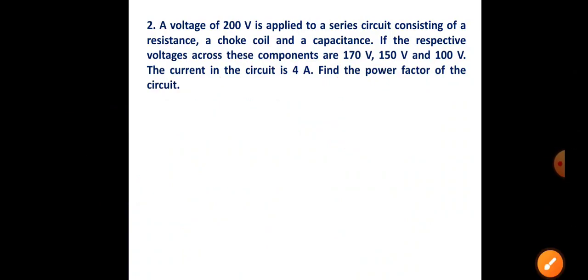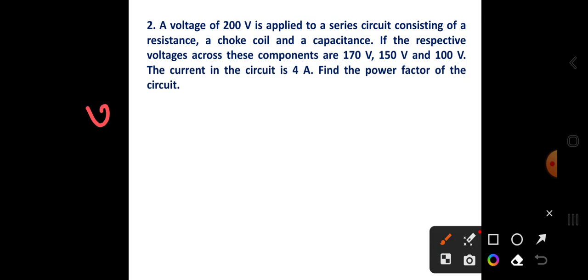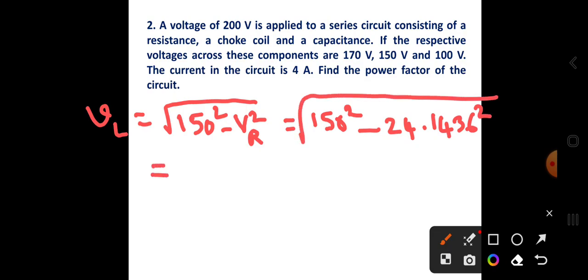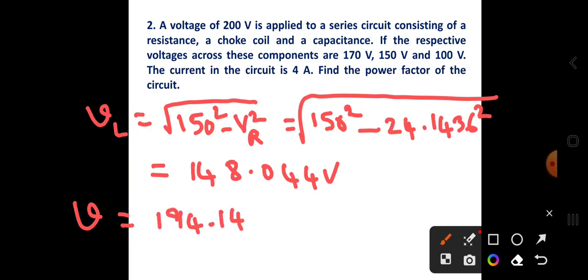The voltage across the inductance is: Vl = √(150² − Vr²) = √(150² − 24.1436²) = 148.044 volts. Therefore the total voltage phasor is: V = 194.1436 + j(148.044 − 100) = 194.1436 + j·48.044 volts.